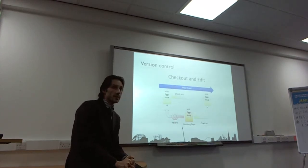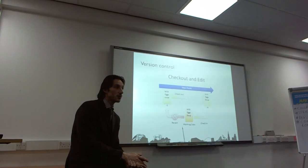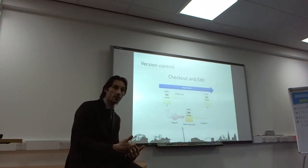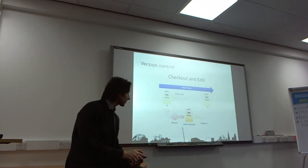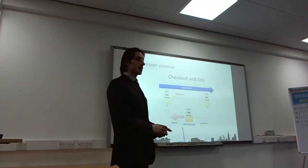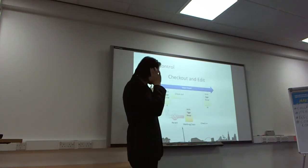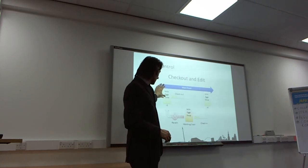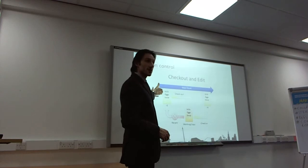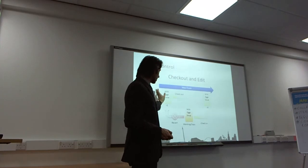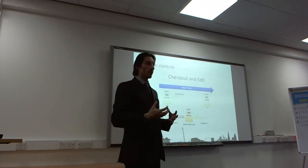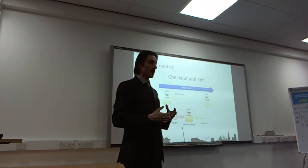Now, in computer science and software development this has been a problem for a long time, because people have been collaborating on software development for much longer than they have on construction information models. So traditionally what would be a mechanism to do that is to get some little information — this is the shopping list that we are designing at this moment — get some little information and check it out, which means take it out of the shared repository with everybody else and put a lock on it.